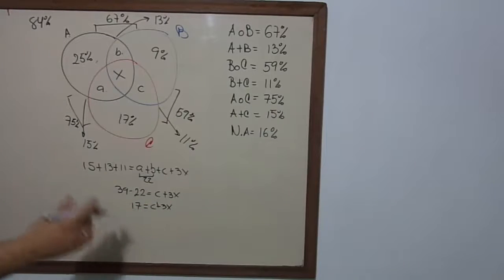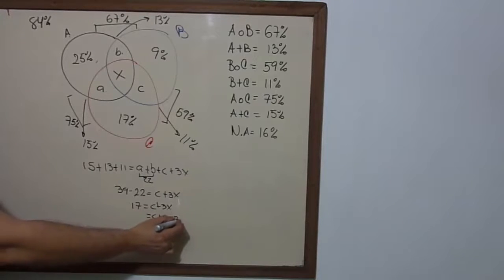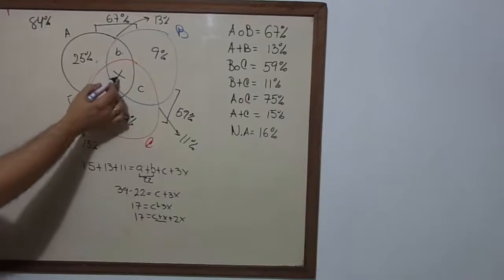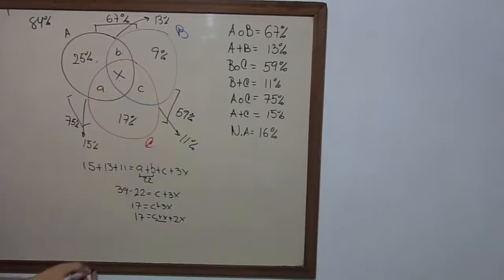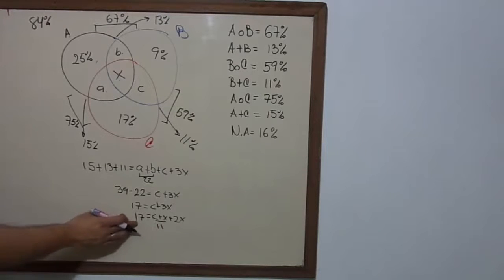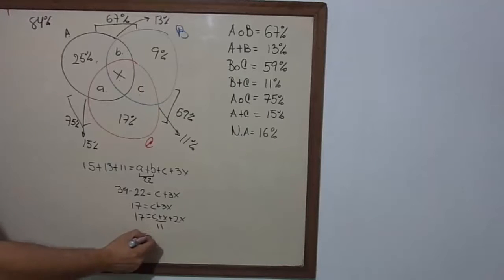But one moment, hold on. You can change this. You can say C plus X plus 2X equals 17, right? And this two, X plus C, are equal to 11. So if you go to the other side of the equation, you take 17 minus 11, and that will give us 6 equals 2X. So X equals 3.